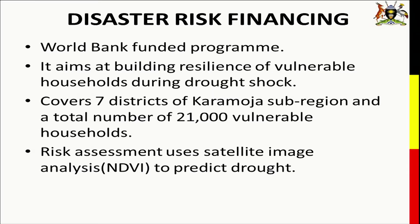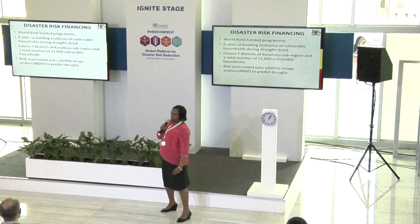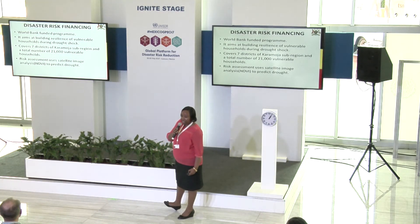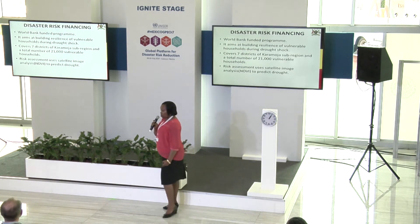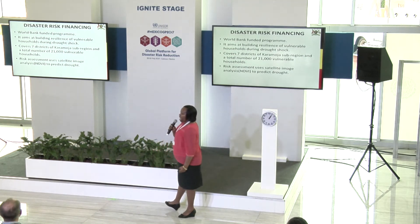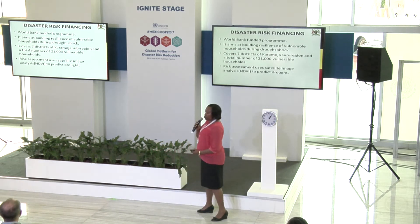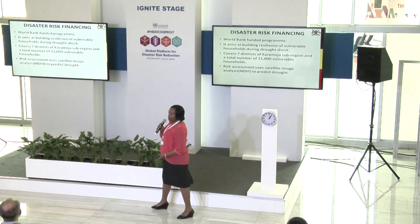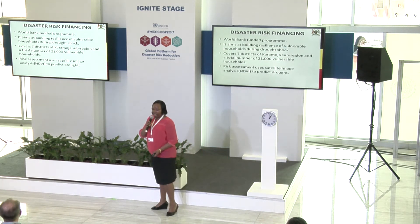Another form of risk assessment in Uganda is disaster risk financing. This is risk transfer — a new concept for disaster risk management. It is being carried out in Karamoja, the eastern part of the country, which is prone to drought. It covers the seven districts of Karamoja, and so far covers 21,000 households that have been classified as vulnerable to drought.